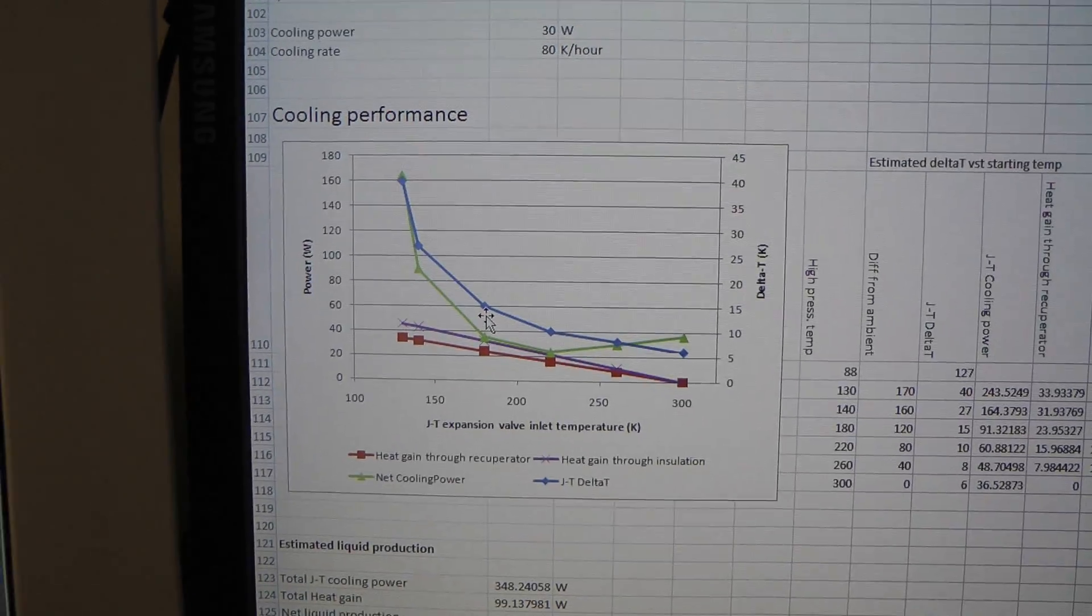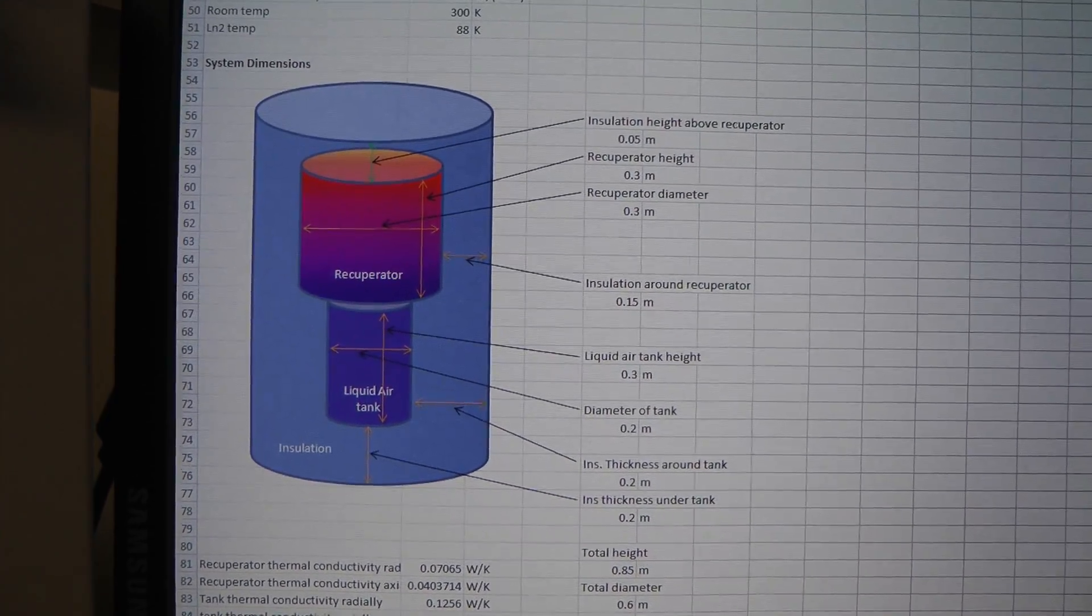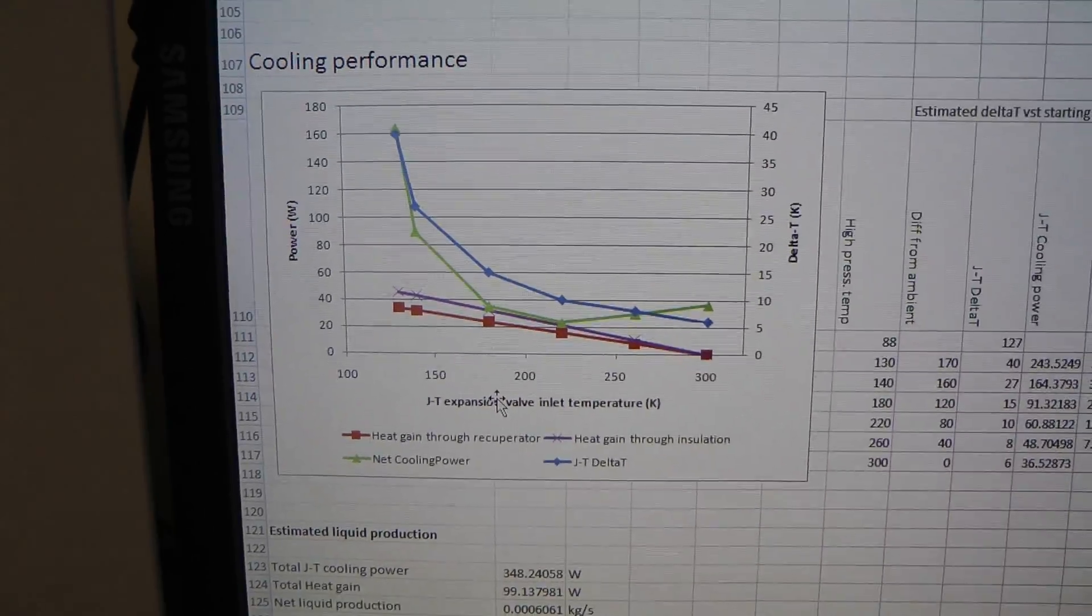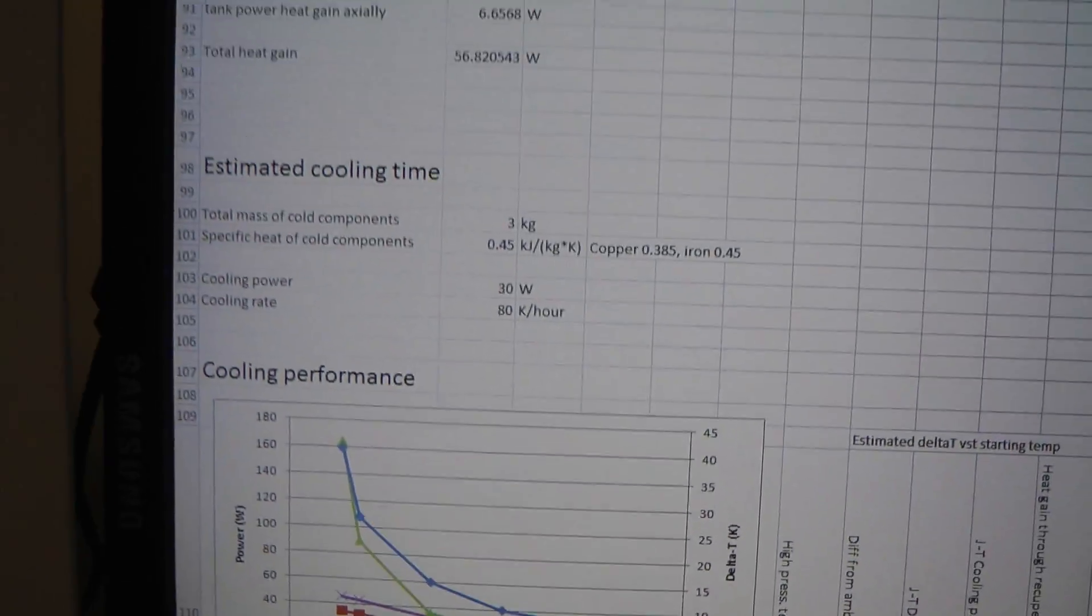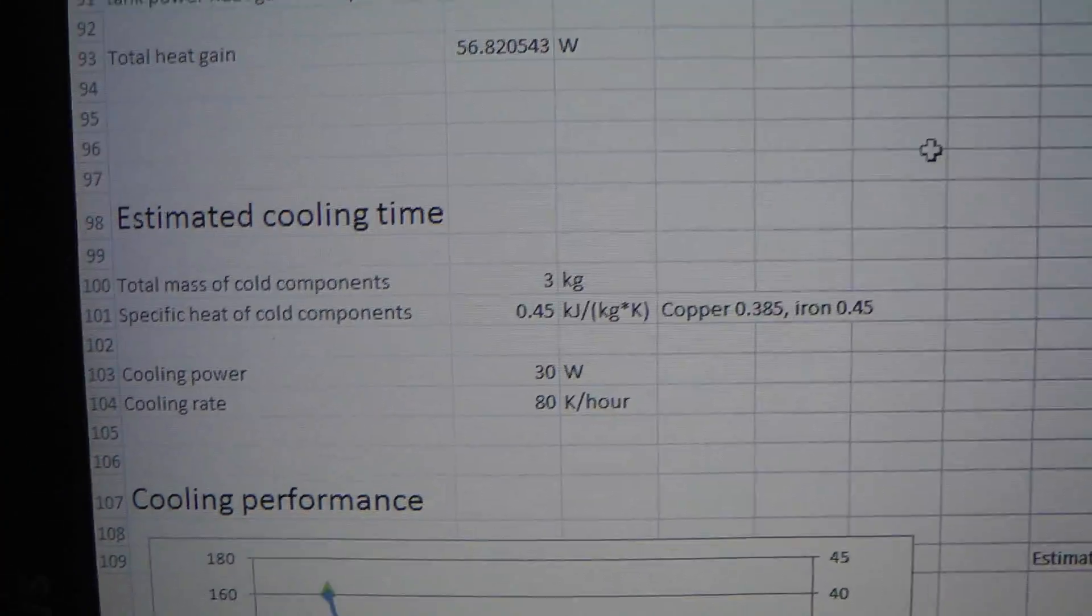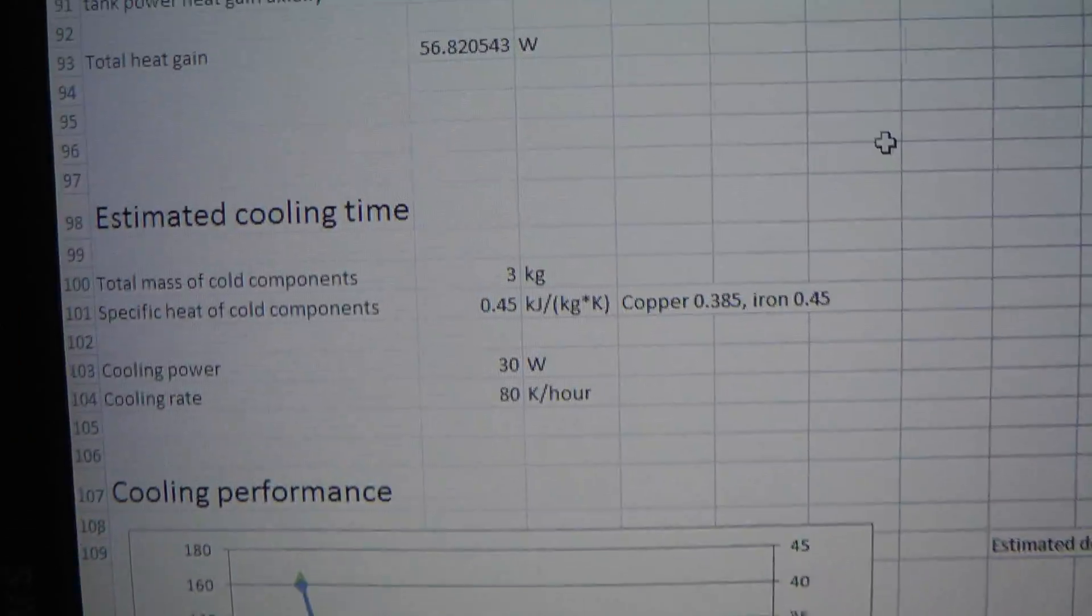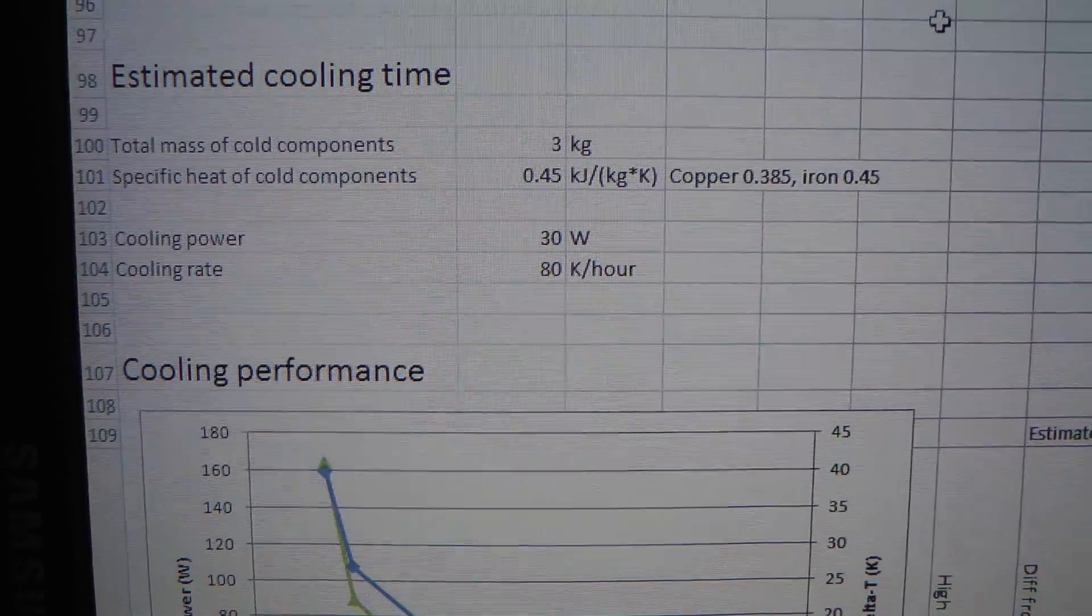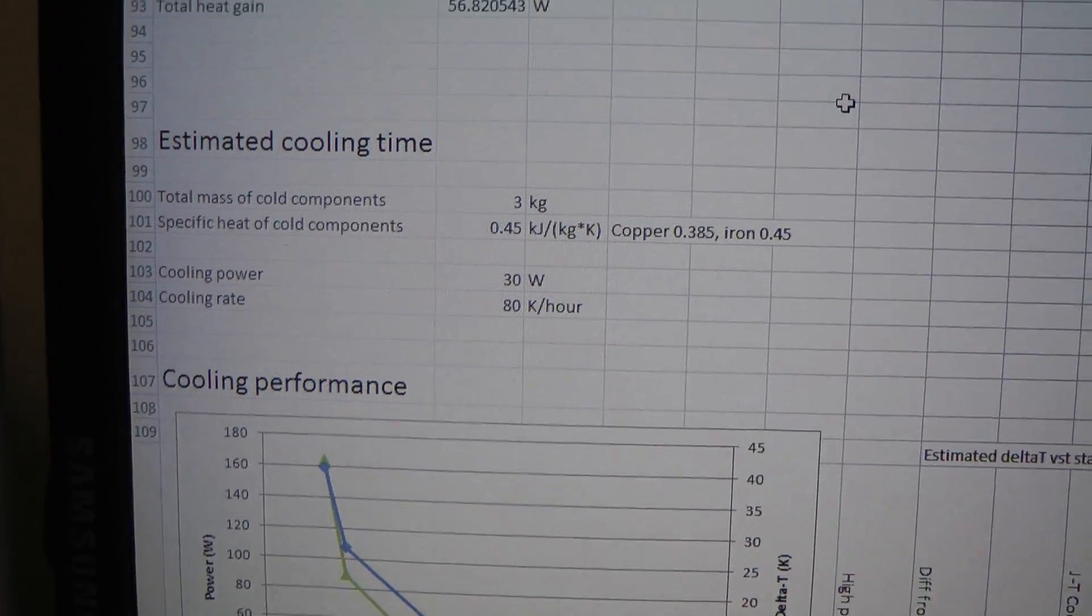But it looks like with these values of insulation thicknesses, something around 15 to 20 centimeters of insulation around everything, and the 15 meter recuperator will probably be okay. Although, it'll take some time for it to get down to temperature. We have less than 30 watts of cooling power. So with that 30 watts cooling power, if we assume there's about 3 kilograms of material, iron or copper in the system, it'll cool down at about 80 Kelvin an hour. So it's going to take probably an hour and a half to two hours to get down from room temperature to liquid nitrogen temperature.